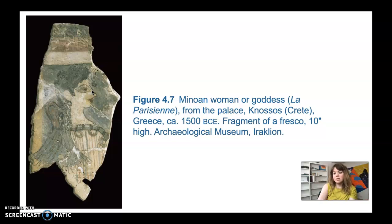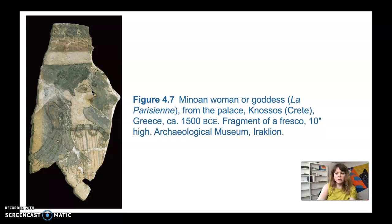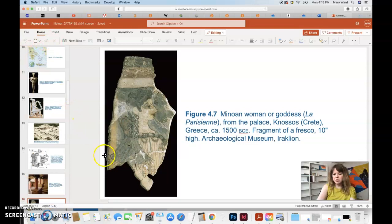The Minoans coated rough palace walls with a fine white lime plaster and used true fresco, or buon fresco, which is different from the Egyptian method. This means the painter applied pigments while the plaster was still wet and had to work quickly before it dried. The reason for this technique is that the pigment actually chemically bonds to the plaster as it dries, making it extremely durable — far more so than fresco secco, which is painting on dry plaster. This wet fresco method, while demanding fast execution, results in paint that bonds with the surface and becomes very, very durable.